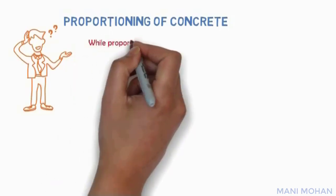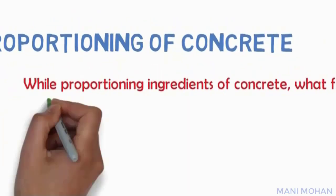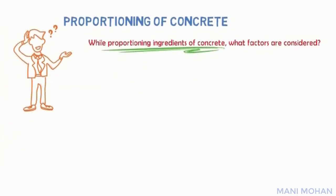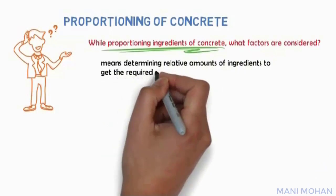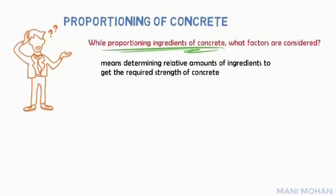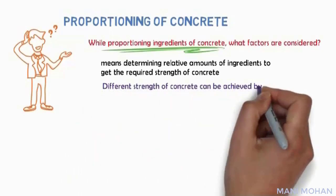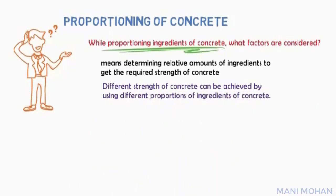Can you tell, while proportioning ingredients of concrete, what factors are considered? The proportioning of ingredients means determining relative amounts of ingredients to get the required strength of concrete. The compressive strength of concrete is an index of the quality of concrete, and an increase in compressive strength increases most of its properties. Different strengths of concrete can be achieved by using different proportions of ingredients.